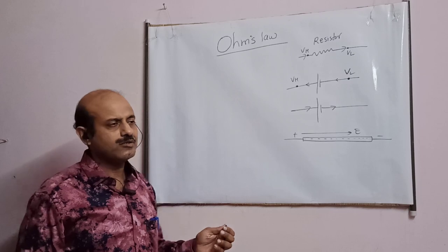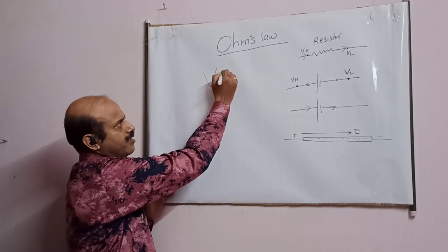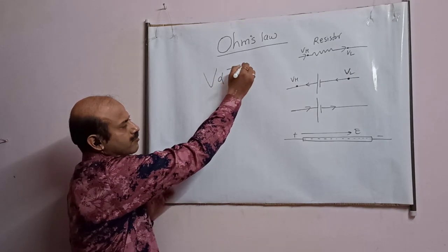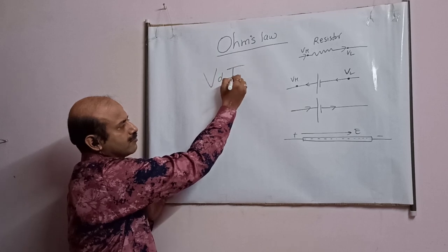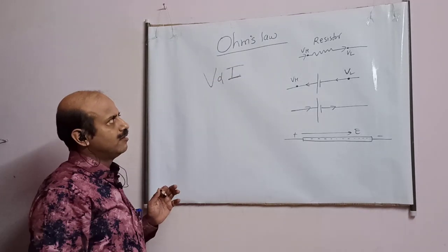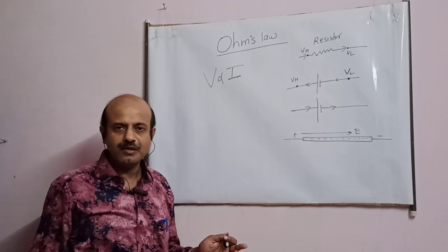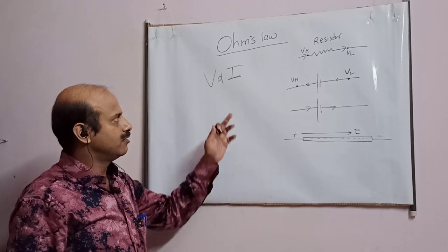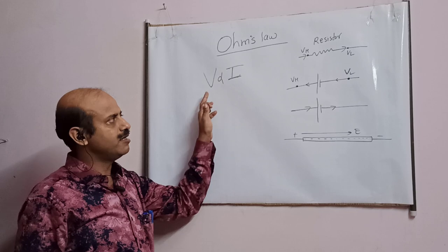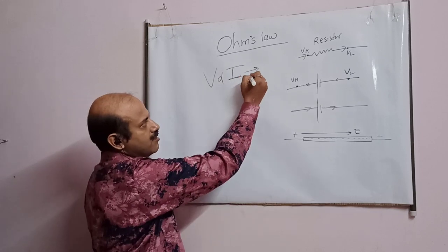Though it looks very simple, it is simply written like this: when a constant current is passed through a conductor, it is proportional to the potential difference. But the condition is that the physical condition must remain the same.